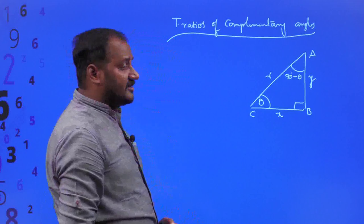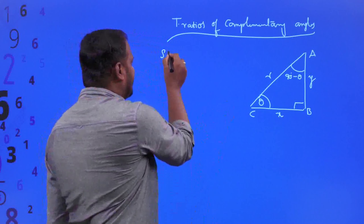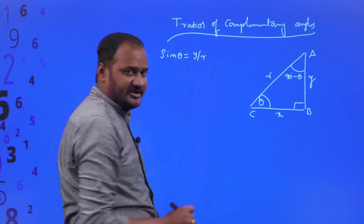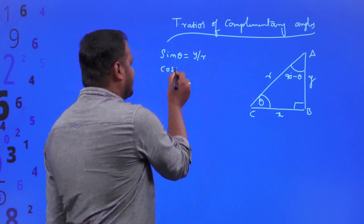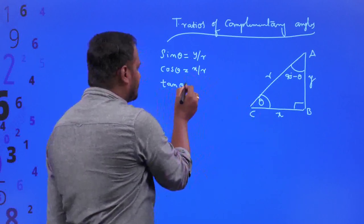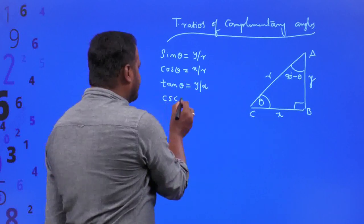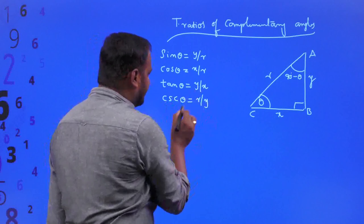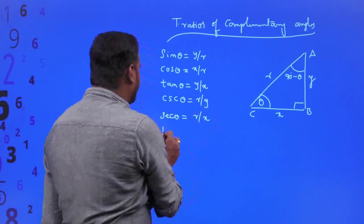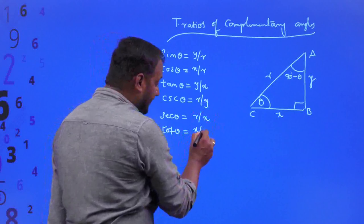I am going to find all the trigonometric ratios with respect to acute angle theta. Sin theta is the side opposite to theta divided by hypotenuse. Cos theta is side adjacent to theta by hypotenuse. Tan theta is side opposite to theta divided by side adjacent to theta. Cosecant theta is hypotenuse by side opposite to theta. Cot theta is side adjacent to theta by side opposite to theta.